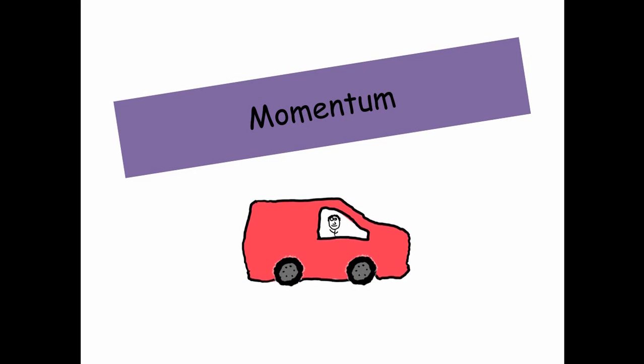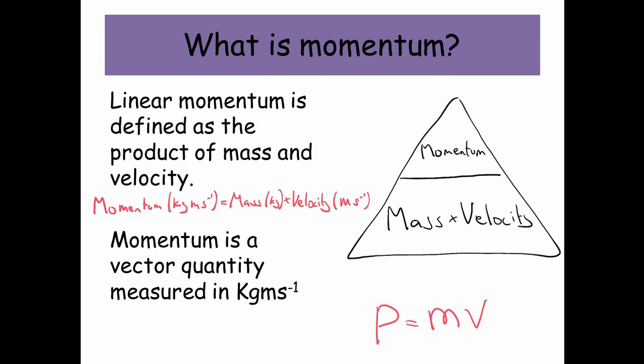Hi guys, today I'm going to go through momentum. So what is momentum? Well, linear momentum is defined as the product of mass and velocity. Momentum, which has the units kilogram meters per second, is equal to mass in kilograms times by velocity in meters per second. And it's important to note that momentum is a vector quantity.